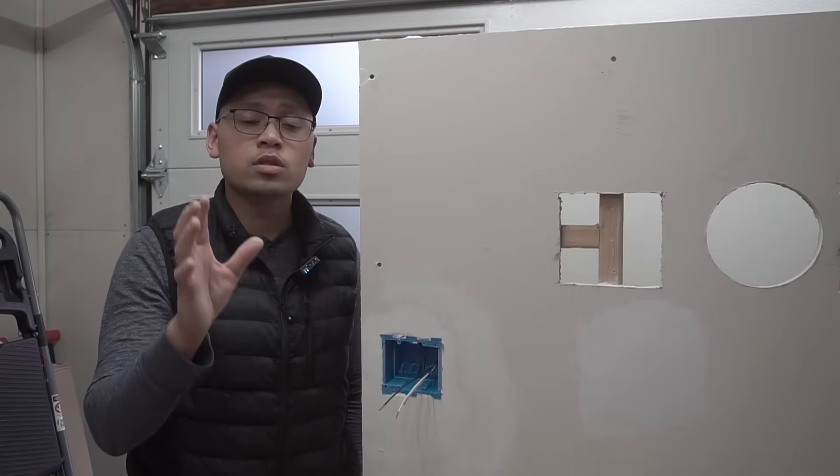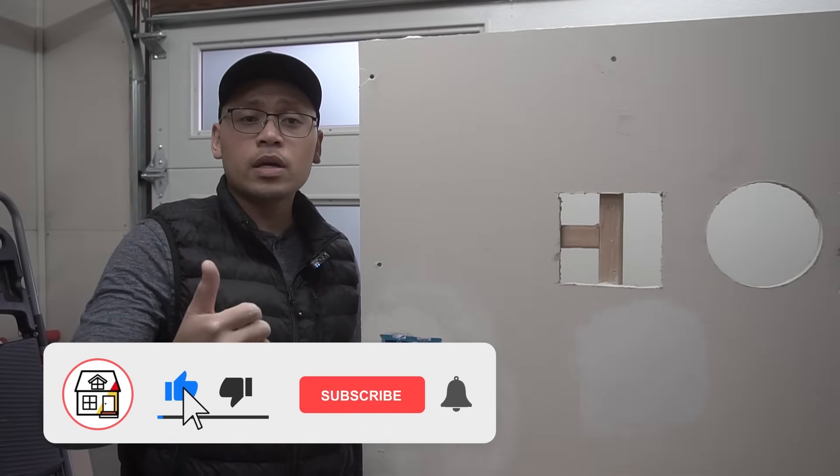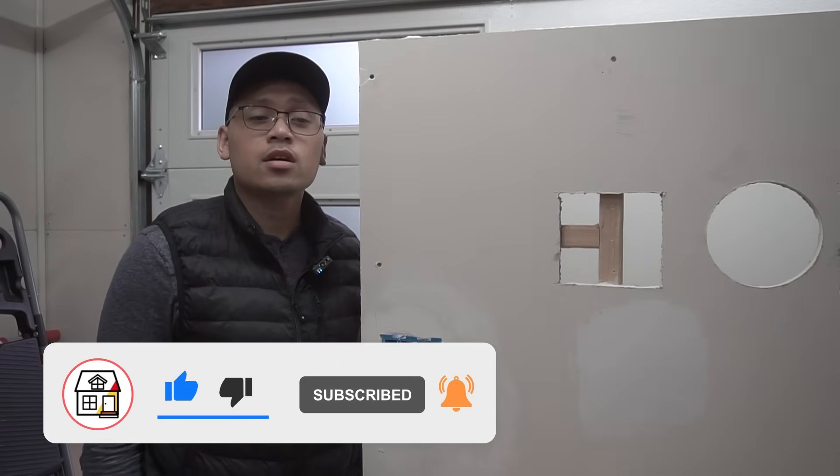So friends, those are my five methods on how you can strip off the sheathing of these non-metallic cables or Romex cables. Let me know in the comment section below which method you use the most and which you like the best. Let me know which method you dislike and which one you least prefer. If you found this video helpful friends, please hit that big thumbs up, press the subscribe and notification bell and I'll see you friends on the next episode.